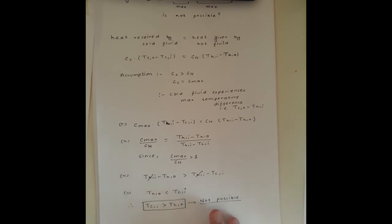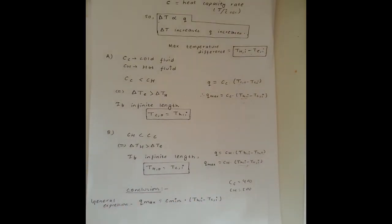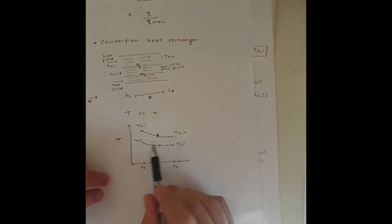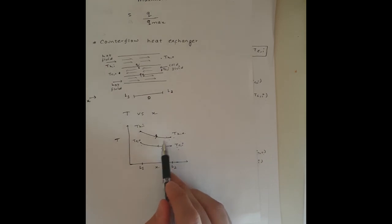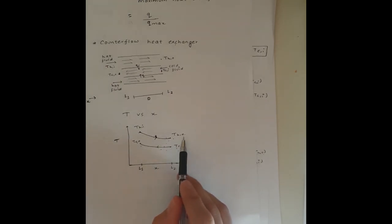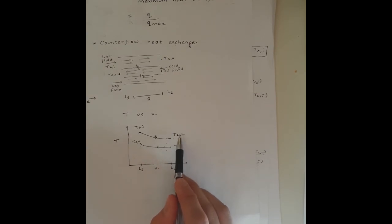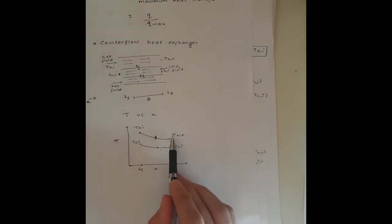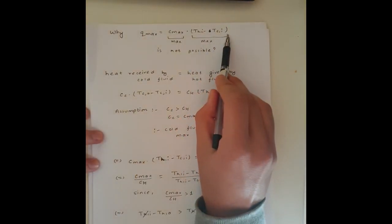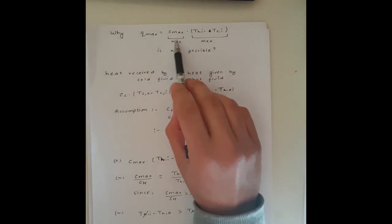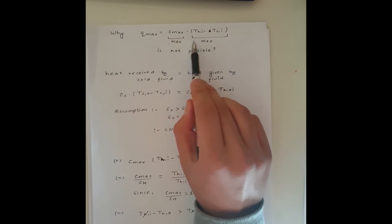This result says the inlet temperature of the cold fluid is greater than the outlet temperature of the hot fluid, which is physically impossible because heat always flows from the hot fluid to the cold fluid. From the graph, the cold fluid absorbs heat from the hot fluid only when the hot fluid's outlet temperature is greater than the cold fluid's inlet. So TCI greater than THO is impossible, making Q_max = C_max × ΔT_max incorrect.